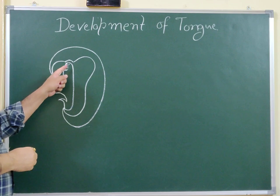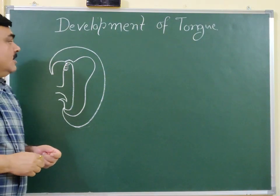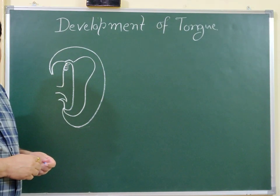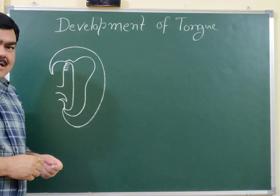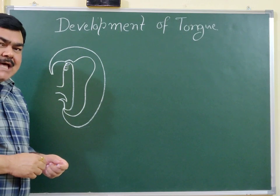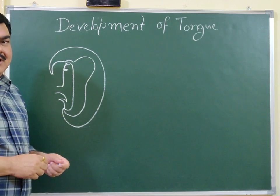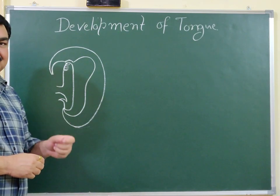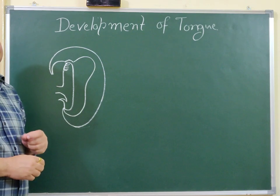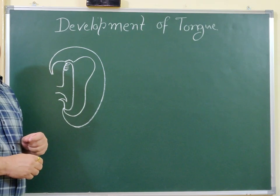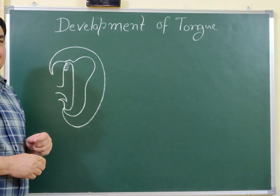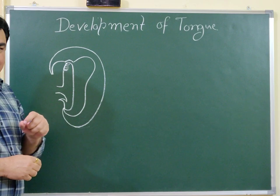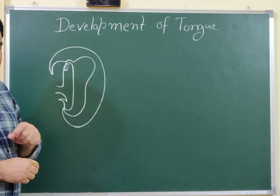These thickenings are known as pharyngeal arches. Initially, six arches are formed: first, second, third, fourth, fifth, and sixth. Just after formation, the fifth arch becomes disappeared.